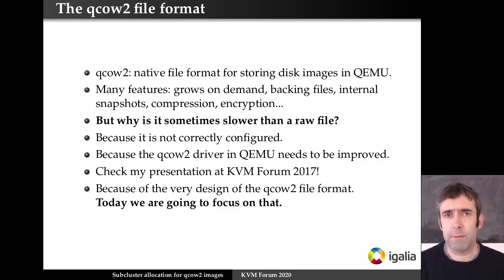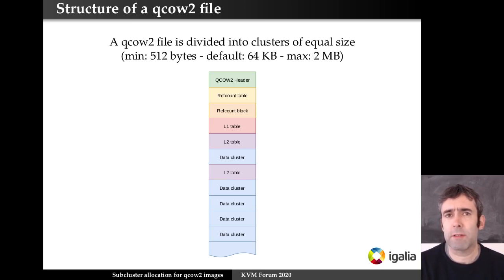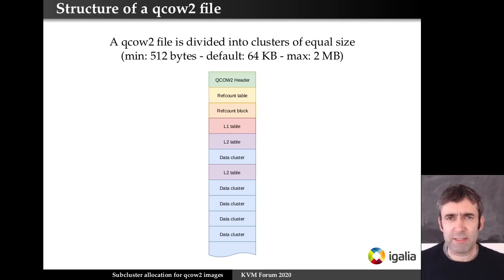But today I want to focus on the problems that are a result of the very design of the QCow2 file format. So let's start with the format itself. The basic idea of QCow2 is that the file is divided into clusters of the same size — 64k by default, but it can be changed when the file is created, from 512 bytes up to 2 megabytes. There are different cluster types, but let's focus on the data clusters which contain the data that the guest can see.